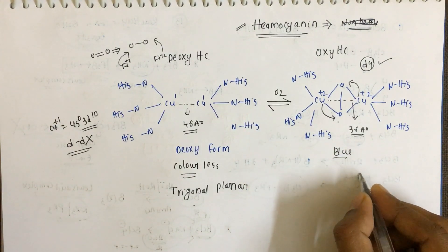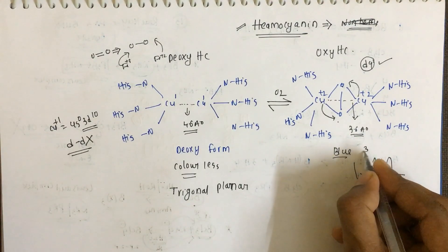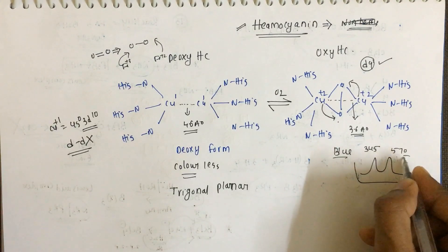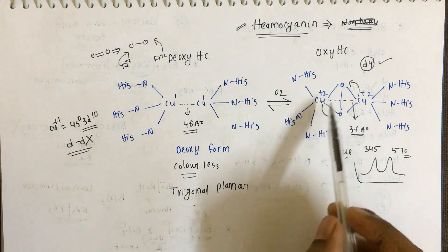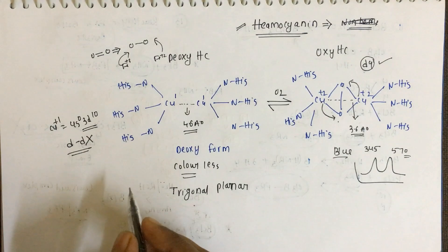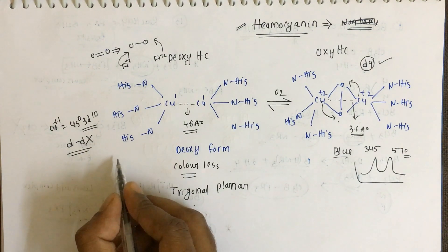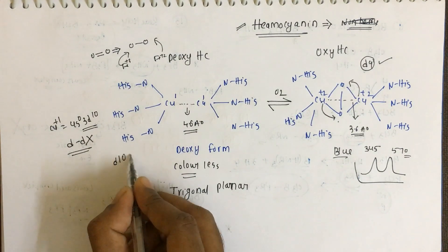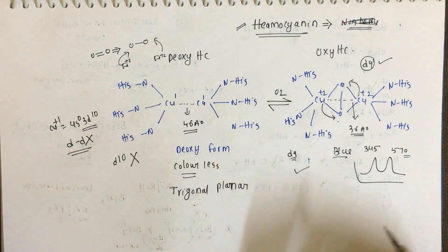In UV spectroscopy we see a two-band spectrum — one band at 345 nanometers and another at 570 nanometers. In EPR spectroscopy, the deoxy form with d10 configuration is inactive, whereas the oxy form with d9 configuration is active in EPR spectroscopy.